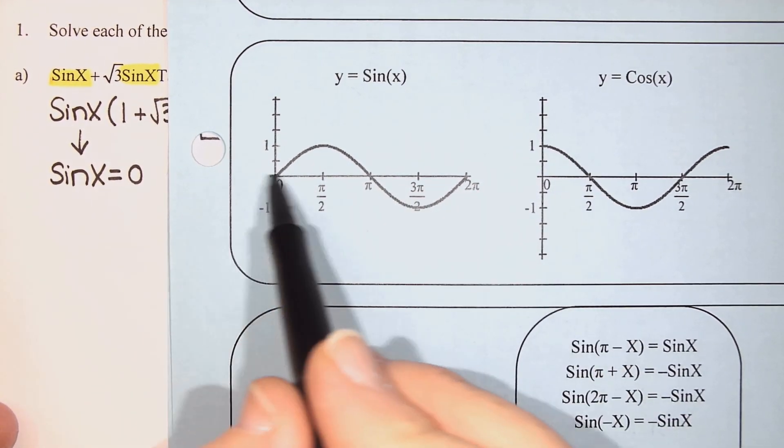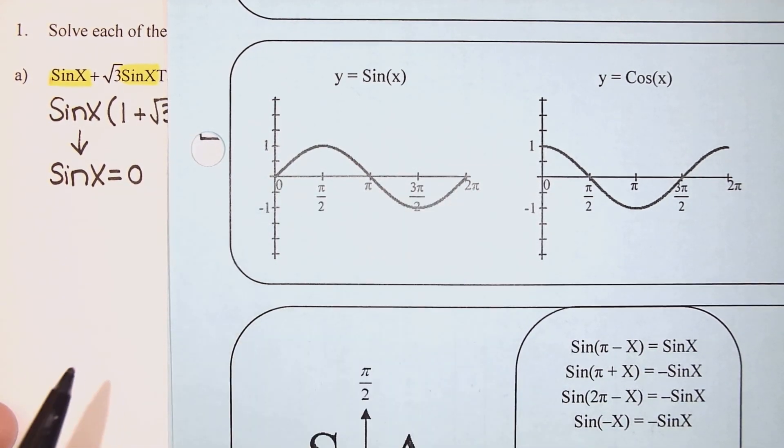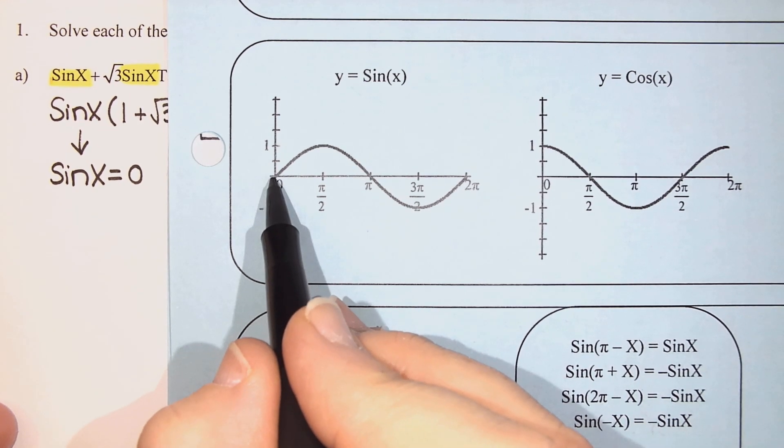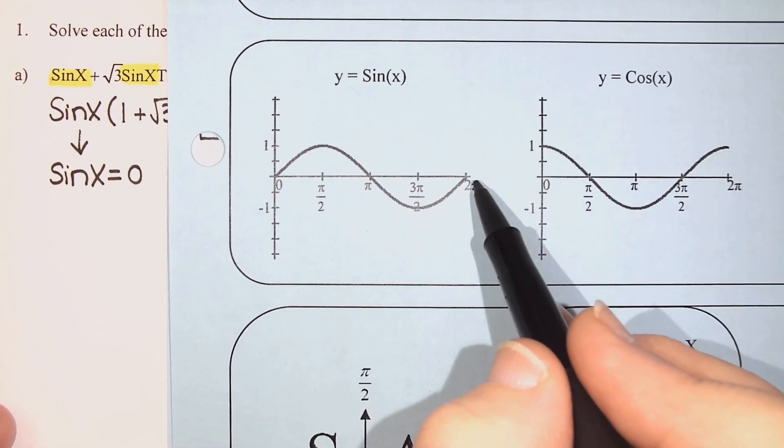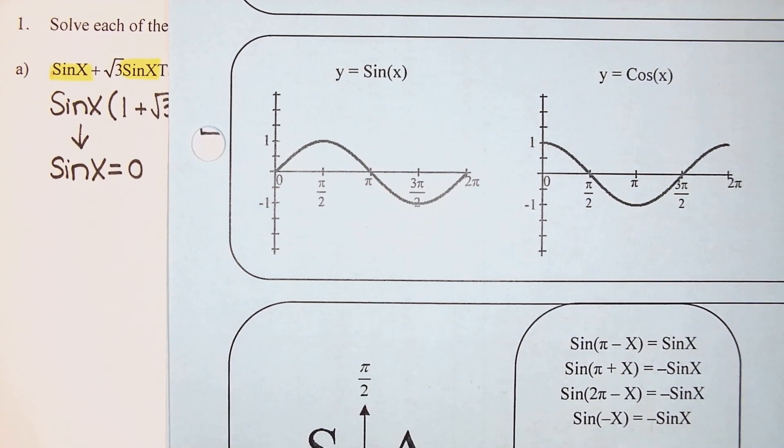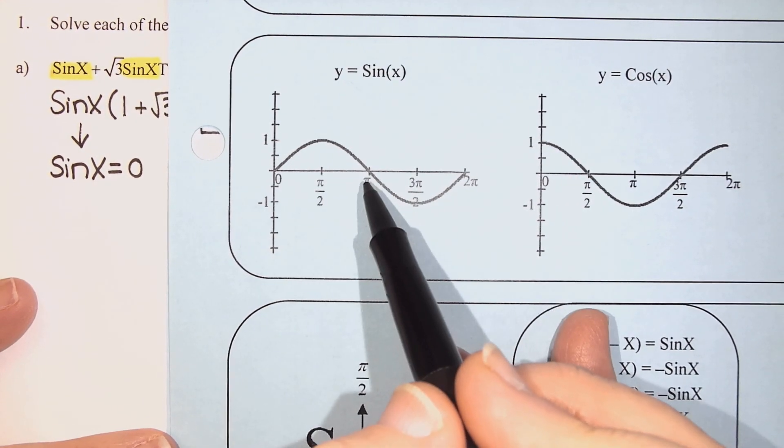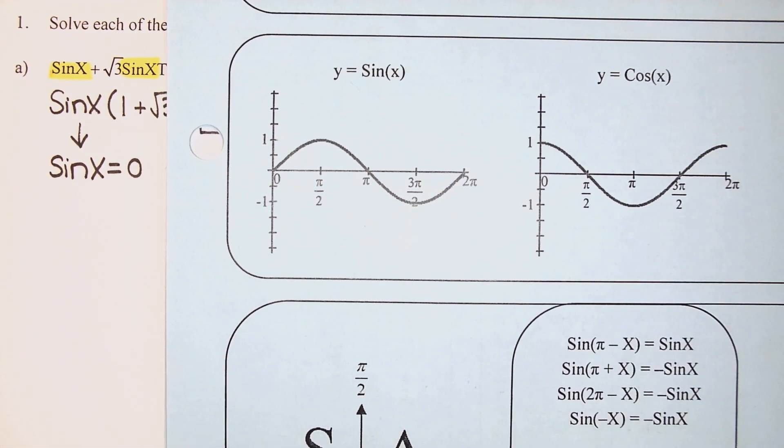I'm going to look here for any places where the y-value is zero. And I see that zero, sin(0), is zero. π, sin(π), is zero. And 2π, sin(2π), is also zero. So there's going to be three possible answers here: either it was zero, it was π, or it was 2π.